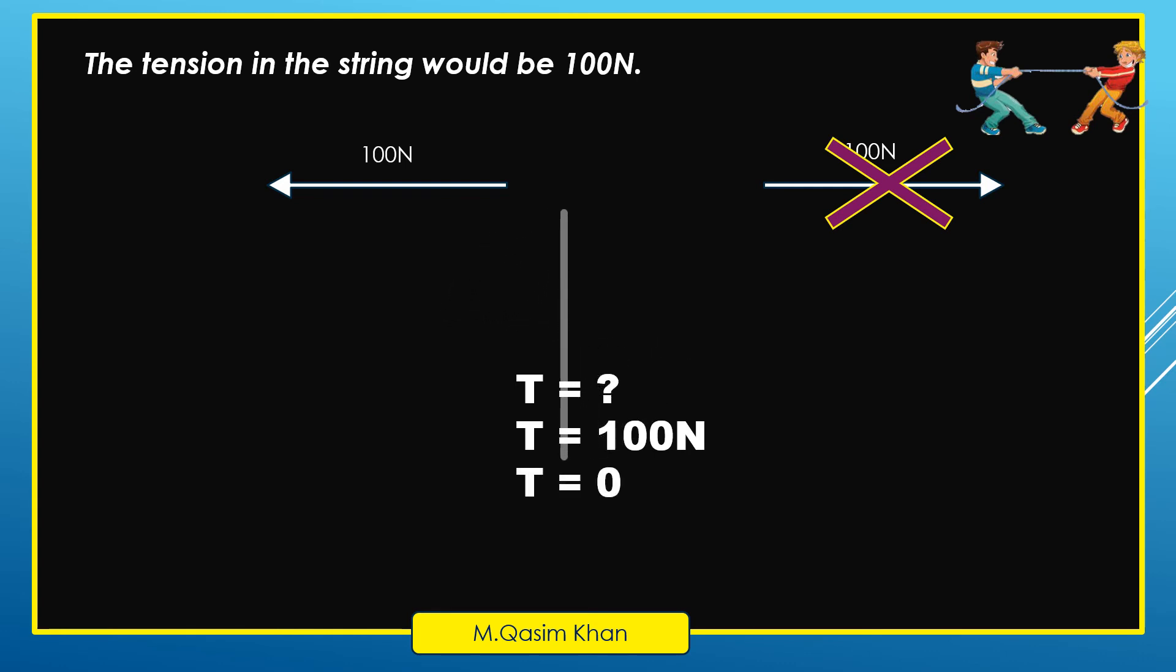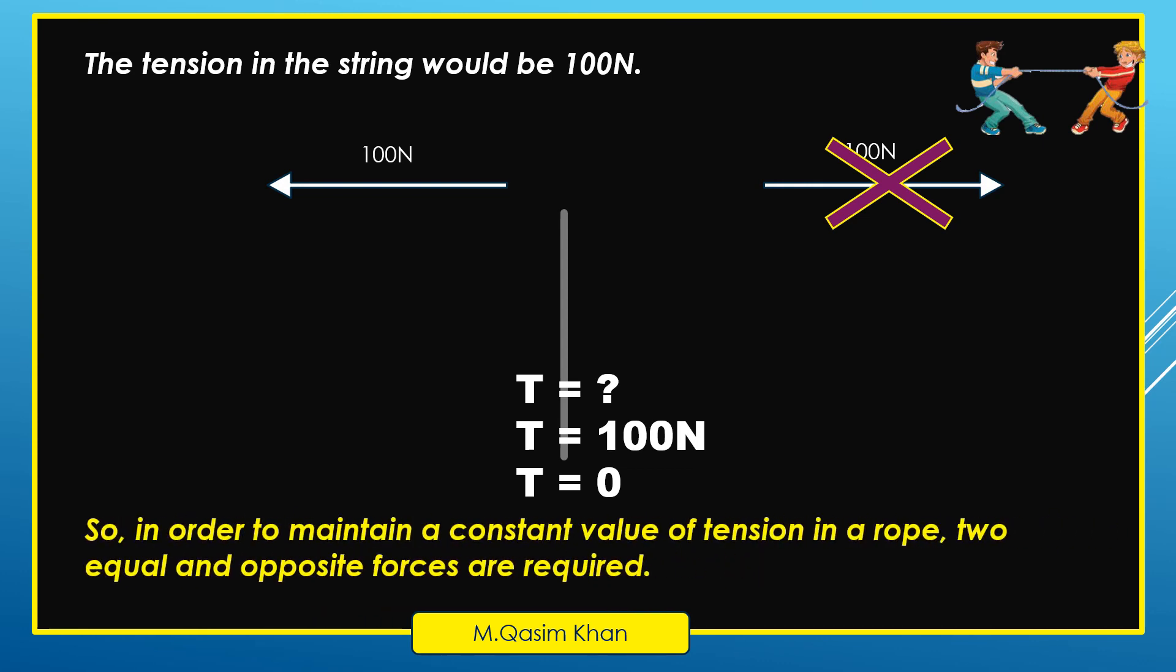So we concluded that in order to maintain a constant value of tension in a rope, two equal and opposite forces are required.